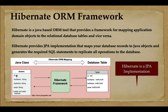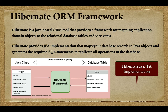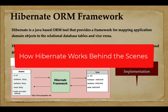For example, consider a Java class called Student with fields like id, first name, last name, and email. On the other hand, we have a Students database table with columns like id, first name, last name, and email. We can use the Hibernate ORM framework to directly map the Student Java class object with the relational database table, and Hibernate will internally map the object fields with the database table columns.